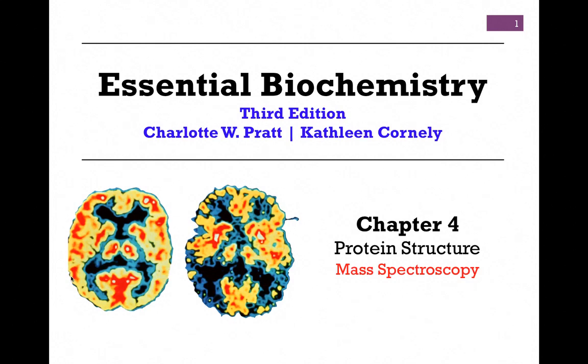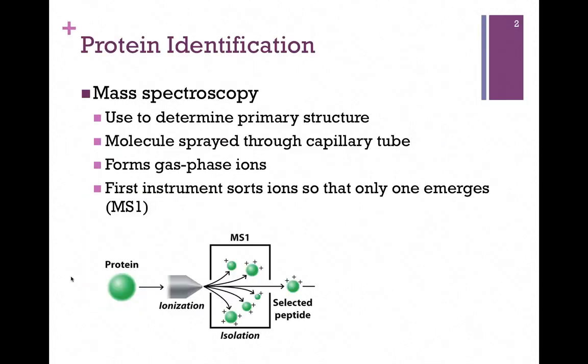In this lesson on protein structure from Chapter 4, we will look at mass spectroscopy. This is a method of protein identification used to determine primary structure.